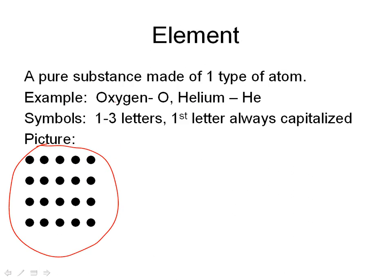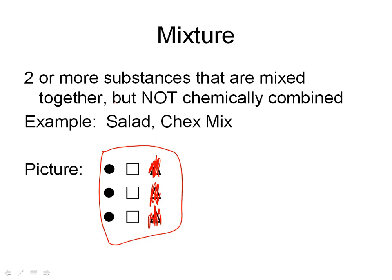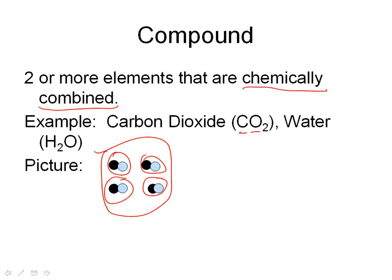So elements, all the same thing, one capital letter. Mixture can be lots of things tossed together, easy to separate. And compound, two or more elements combined, and they don't come apart very easily.